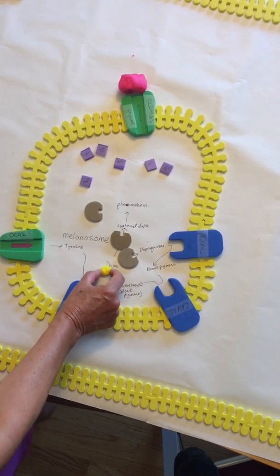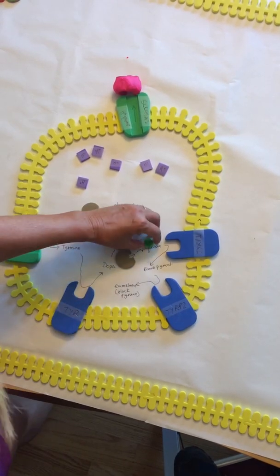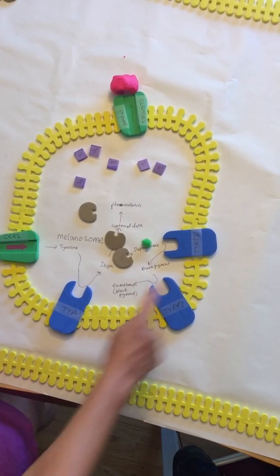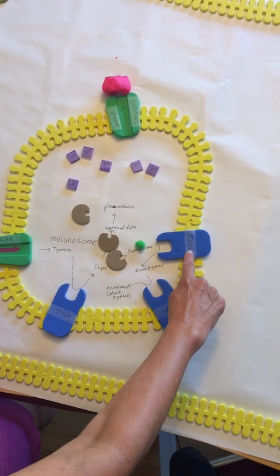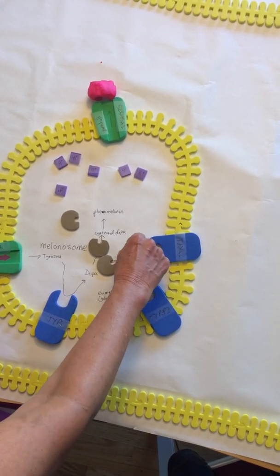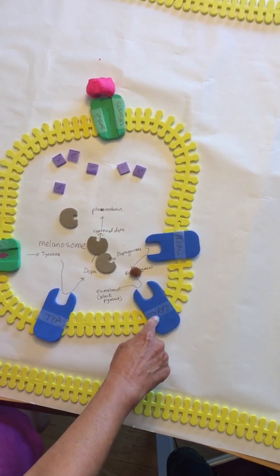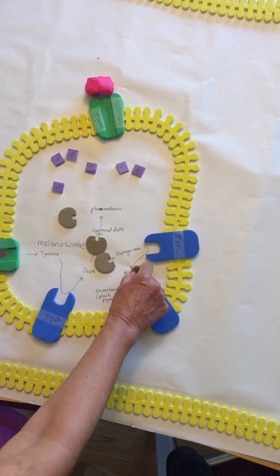If we have dopa, this enzyme turns it into dopa quinone, and then this membrane-bound enzyme TYRP1 will turn dopa quinone into the brown pigment.